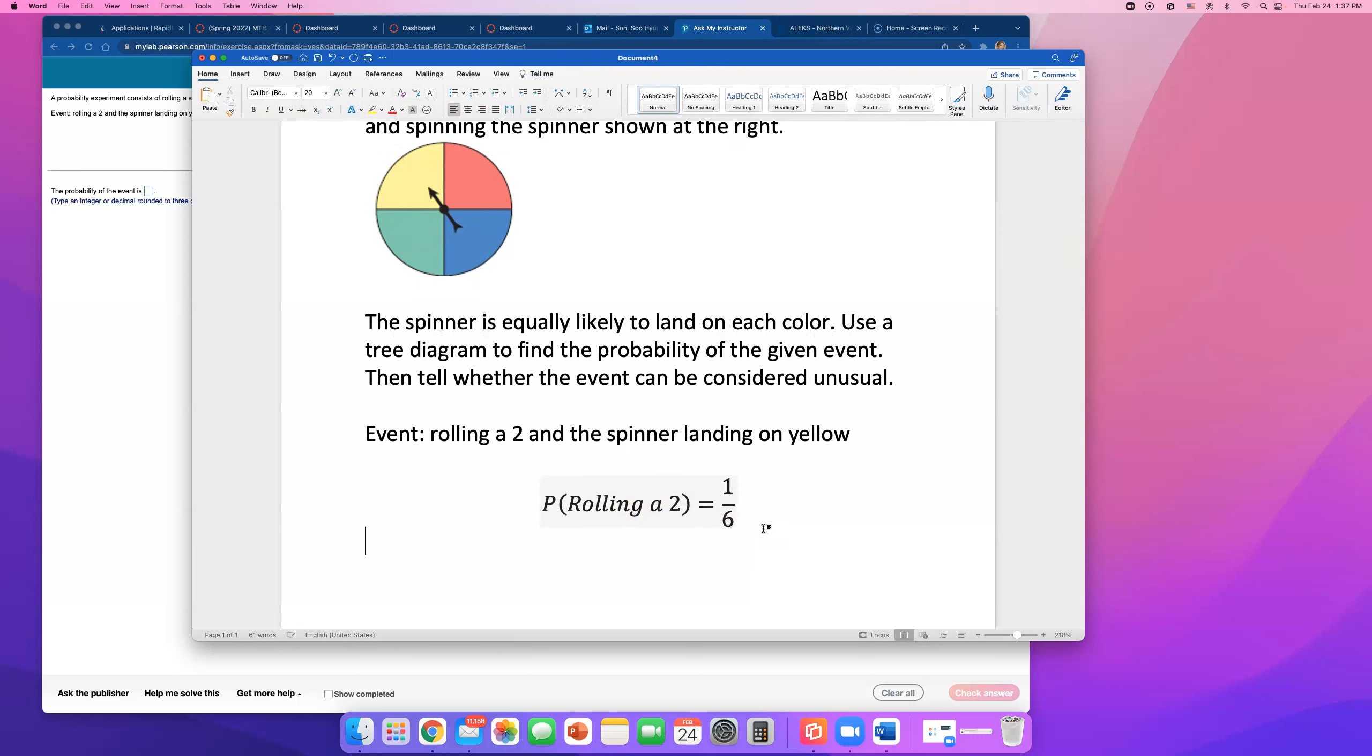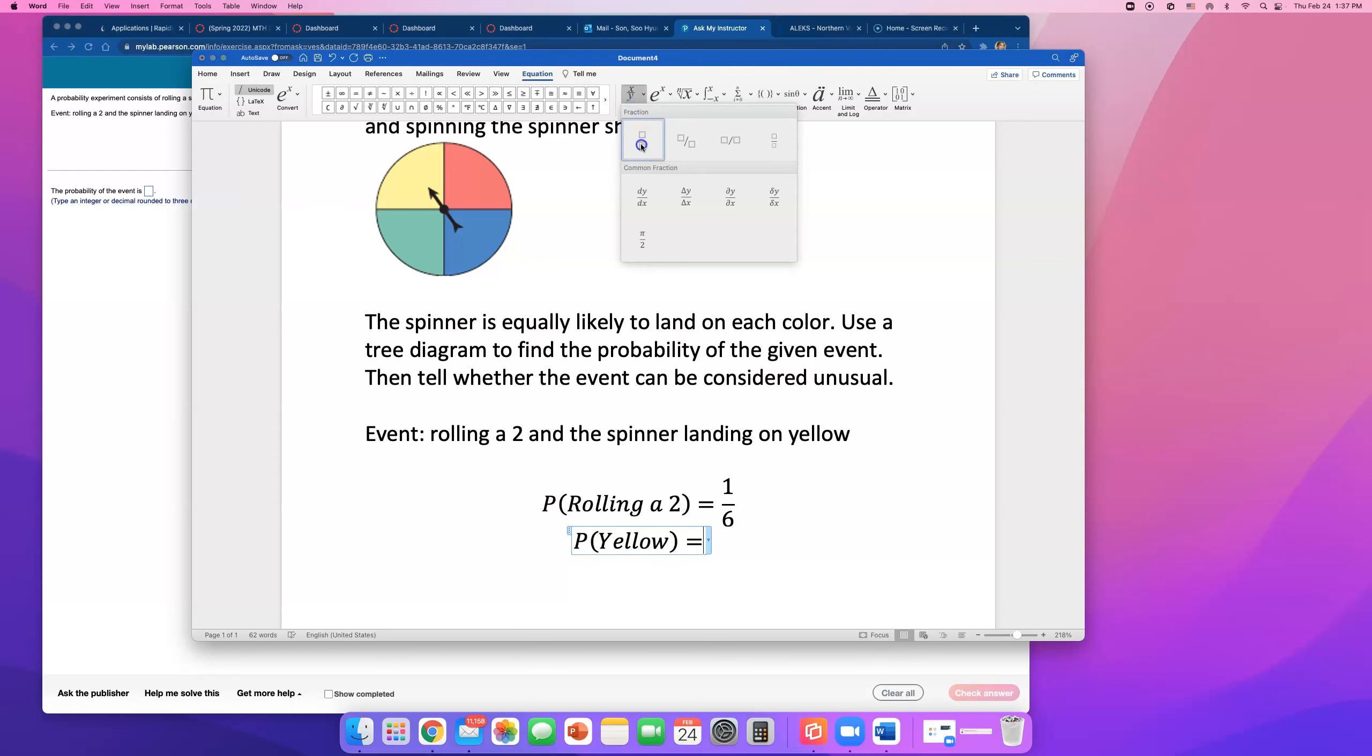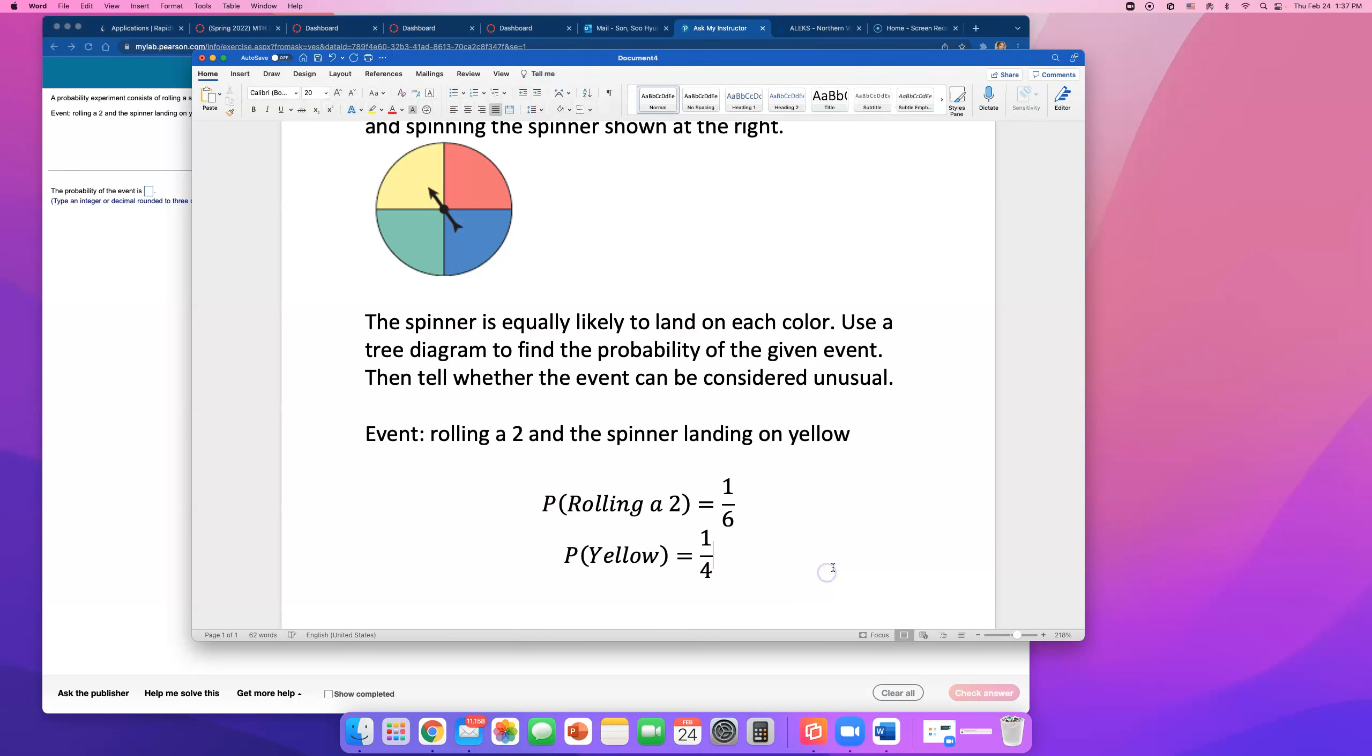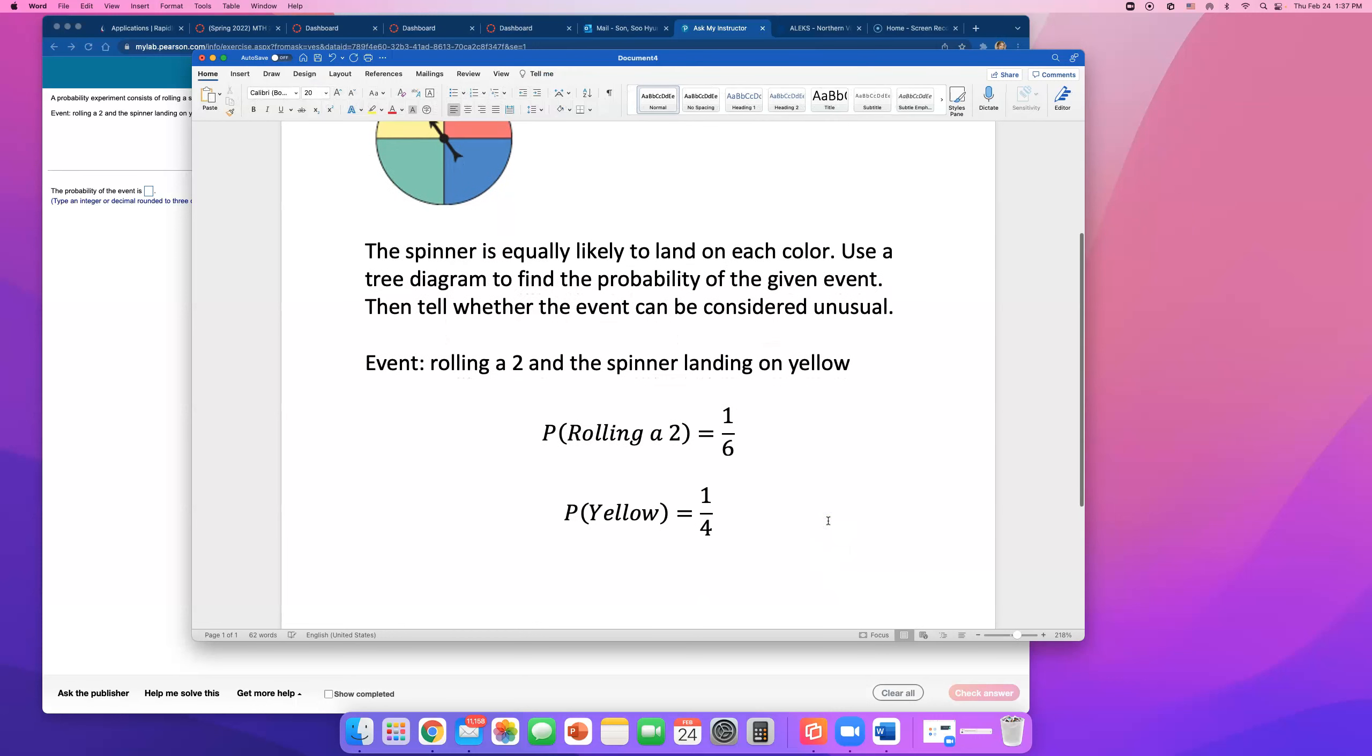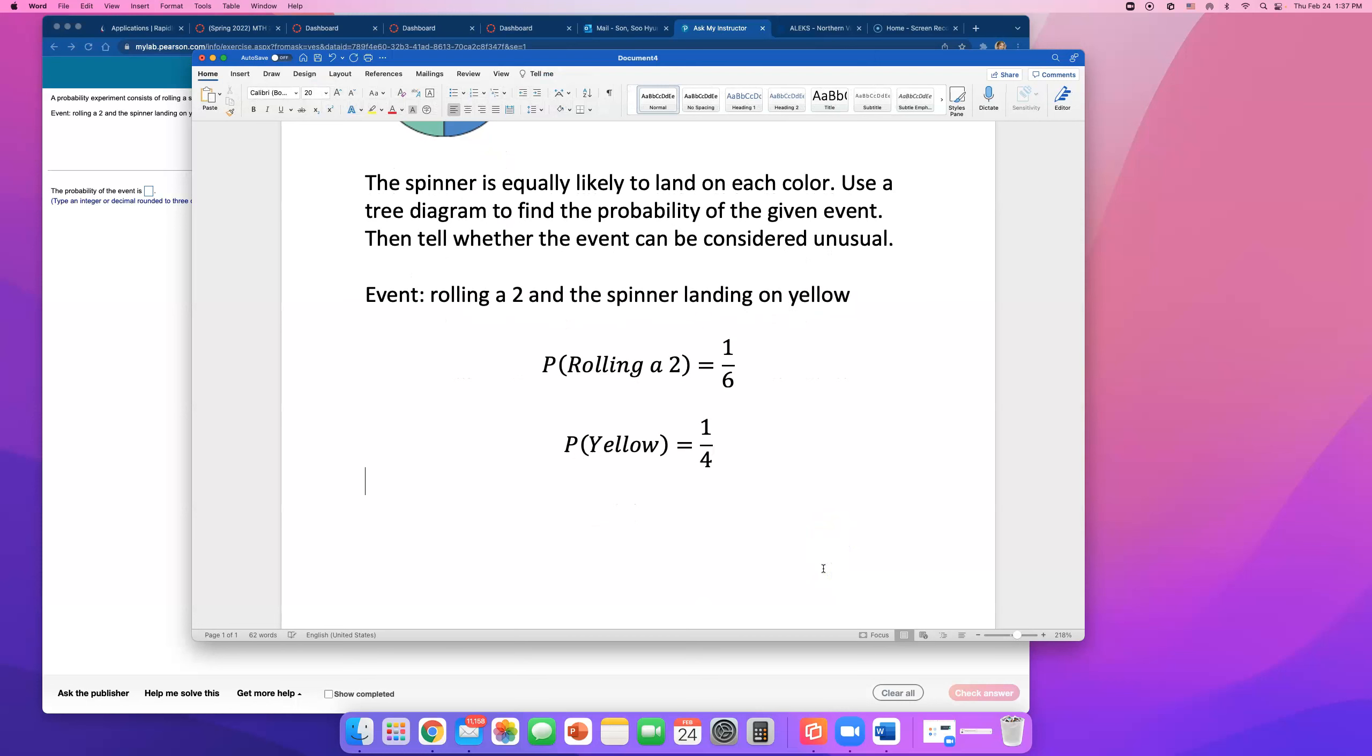Next, what is the probability that I will spin the spinner and get yellow? There are four different colors, right, but there is only one face, one slice that is yellow, so that's gonna be 1 out of 4. So let's find the probability that both will happen.